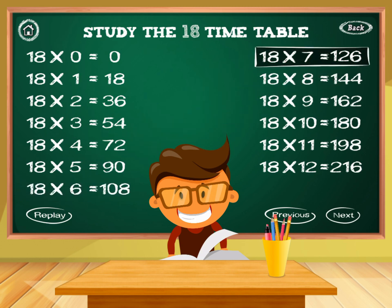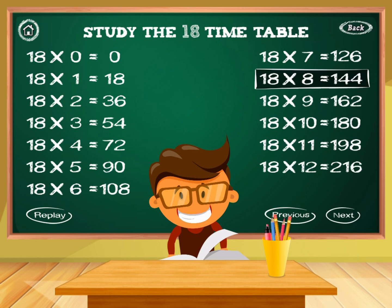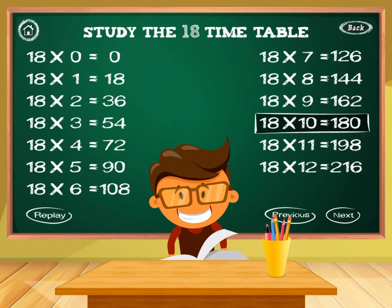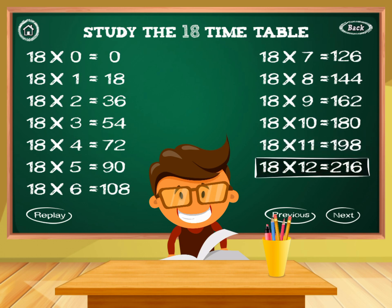18 times 7 equals 126. 18 times 8 equals 144. 18 times 9 equals 162. 18 times 10 equals 180. 18 times 11 equals 198. 18 times 12 equals 216.